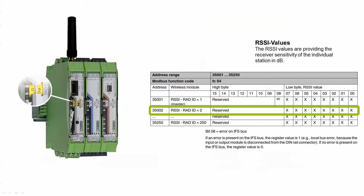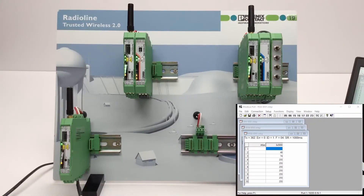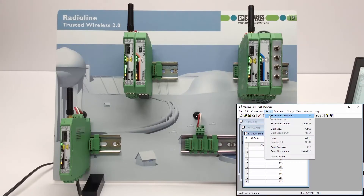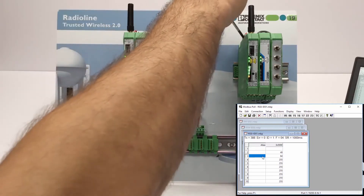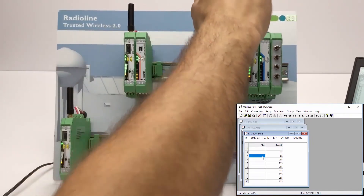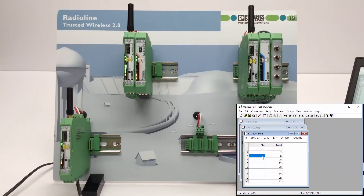The Modbus table also provides status and diagnostic parameters of the individual radio stations, such as the RSSI values, also known as signal strength of the respective radio stations. The RSSI values of all wireless modules in the network are stored in the address range 35001 to 35250. For example, to read out the signal strength of the radio station with RAD ID 02, register 5002 must be read. The register indicates the signal strength in dB. When a wireless station is disconnected from the network, the value 255 is displayed. This allows a Modbus controller to monitor the complete wireless network.